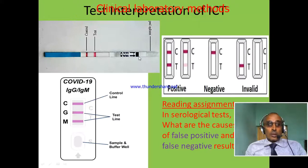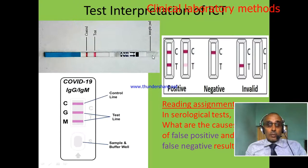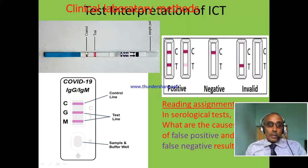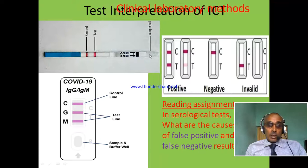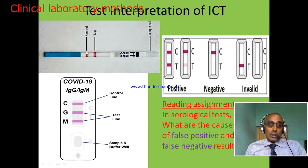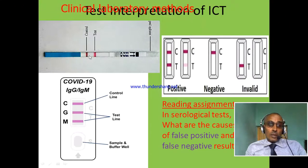We can also use the test strip method. The sample is added at the sample pad and migrates to bind the antigen. Sometimes we immerse this part of the strip, and the sample migrates to the antigen or antibody at the middle of the strip, forming a red bar.